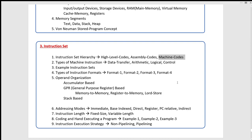The x86 architecture process can be used as an instruction set. In Motorola and Apple processes there is a different architecture. In Intel and AMD processes there is the x86 architecture. In Apple processes, there is a different process architecture. There is no cross-compatibility of machine codes between different architectures.